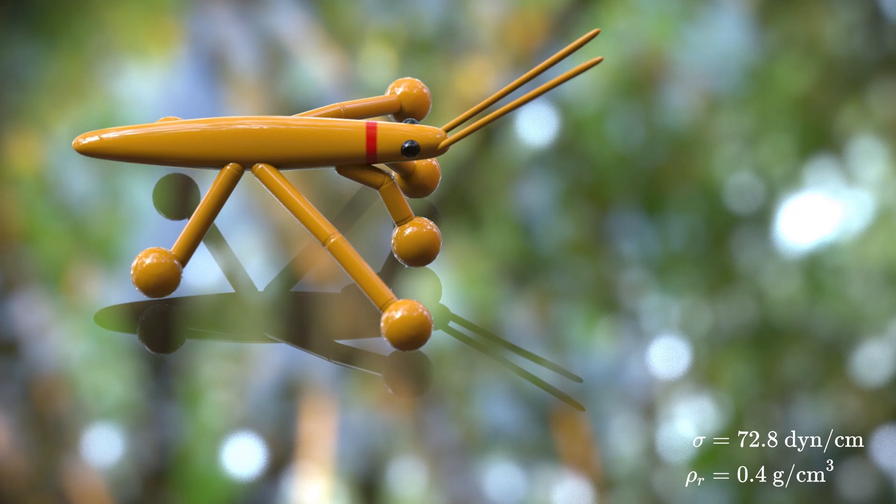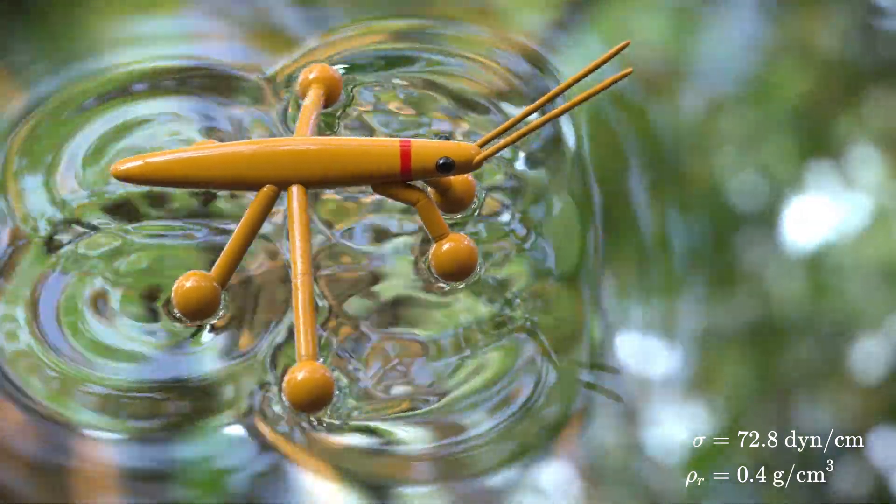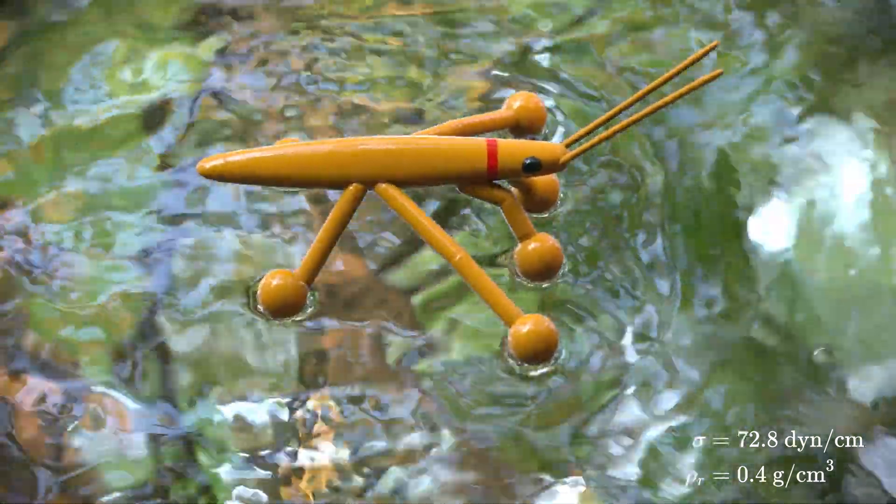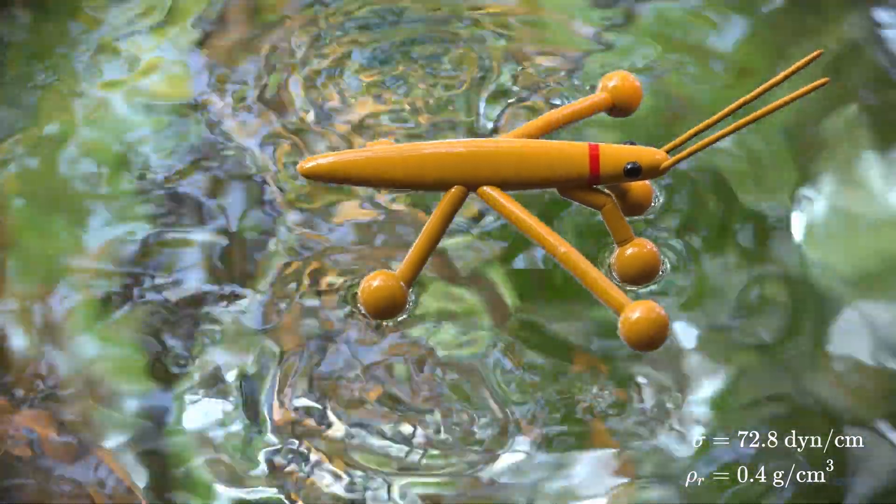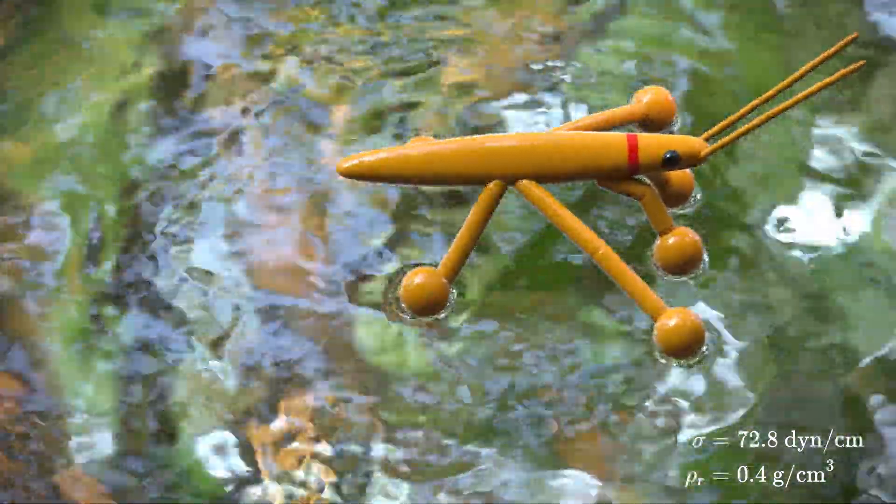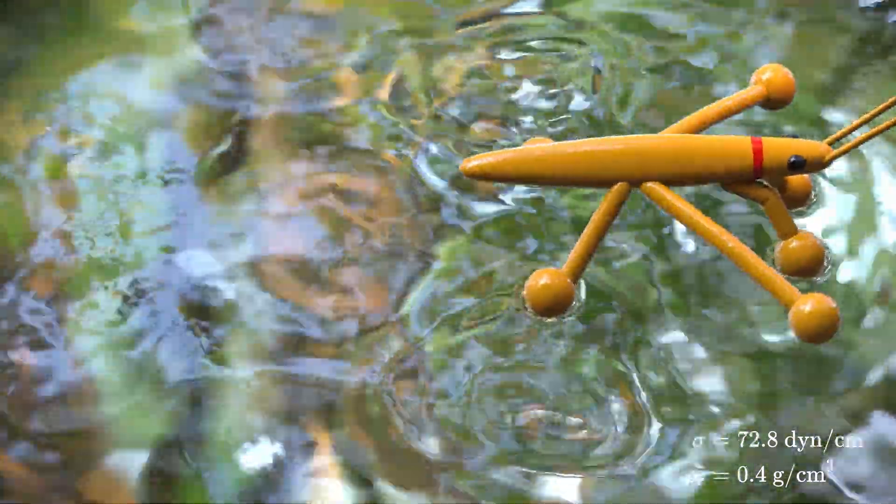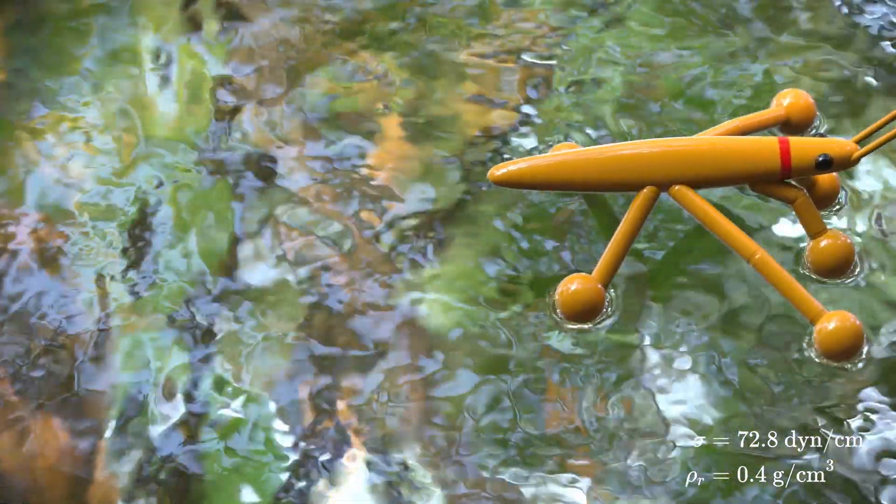Lastly, we show a mini-scale robot that stands and walks on a surface-tensioned water surface, actuated by its kinematic joints. Thank you.